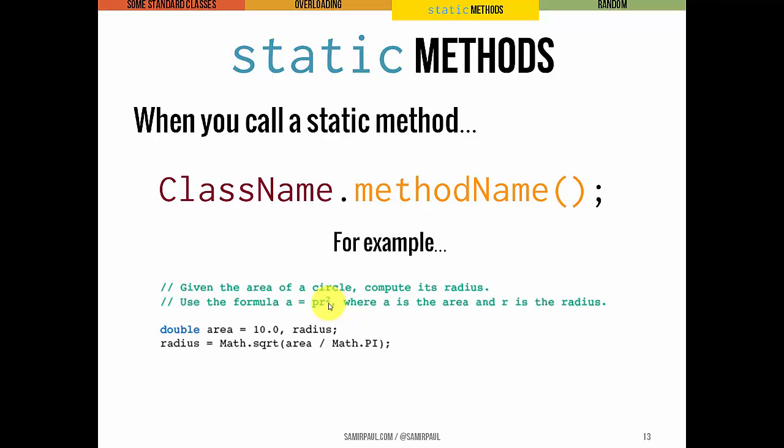we'll base it off the formula area equals pi r squared. We start by declaring one double called area, and that's initialized to 10 square units, and we'll declare a radius.